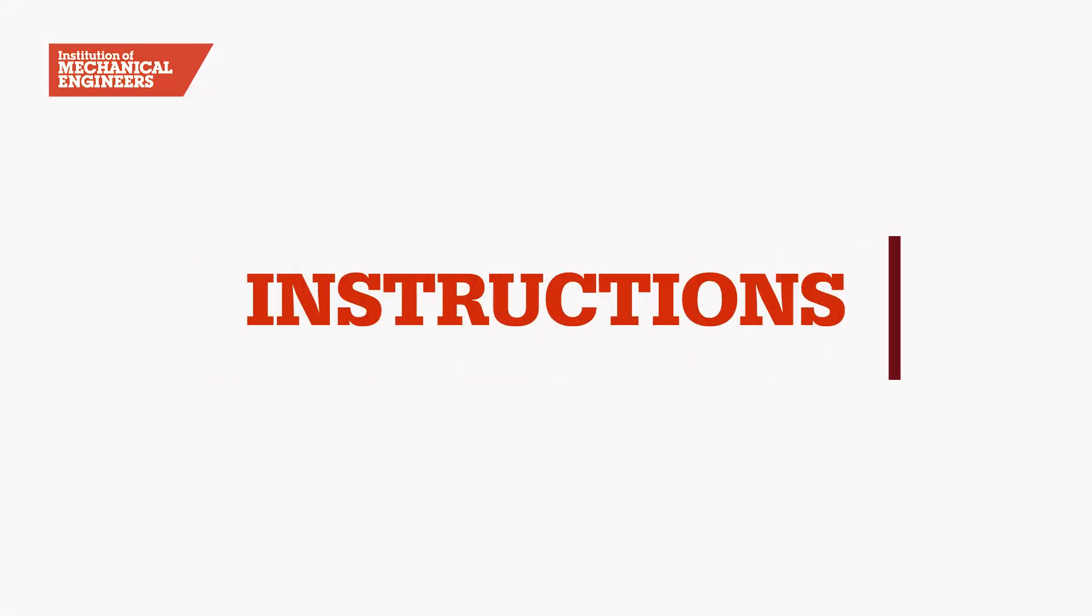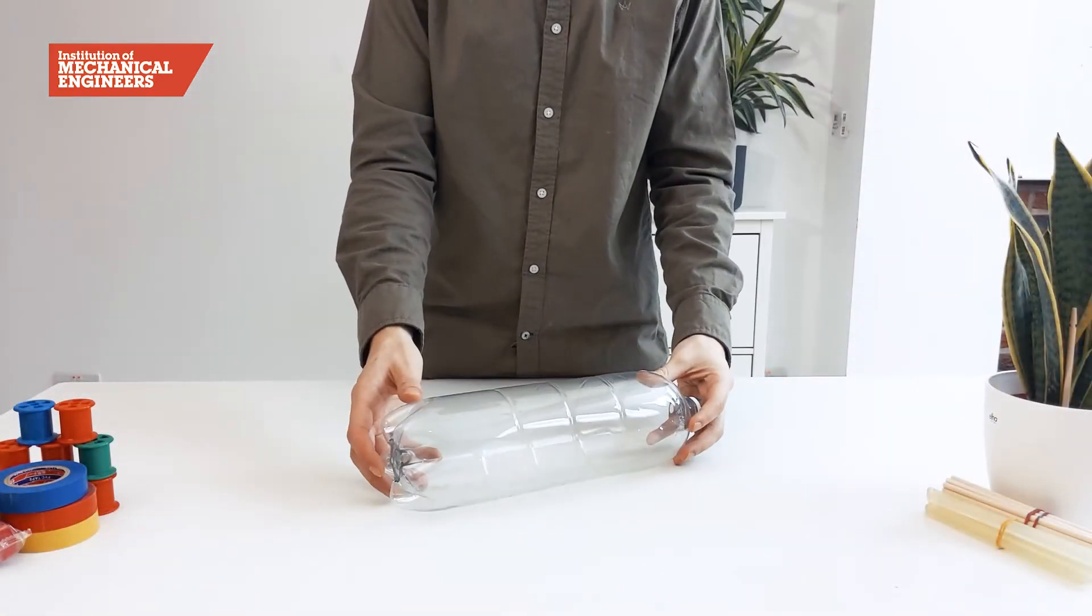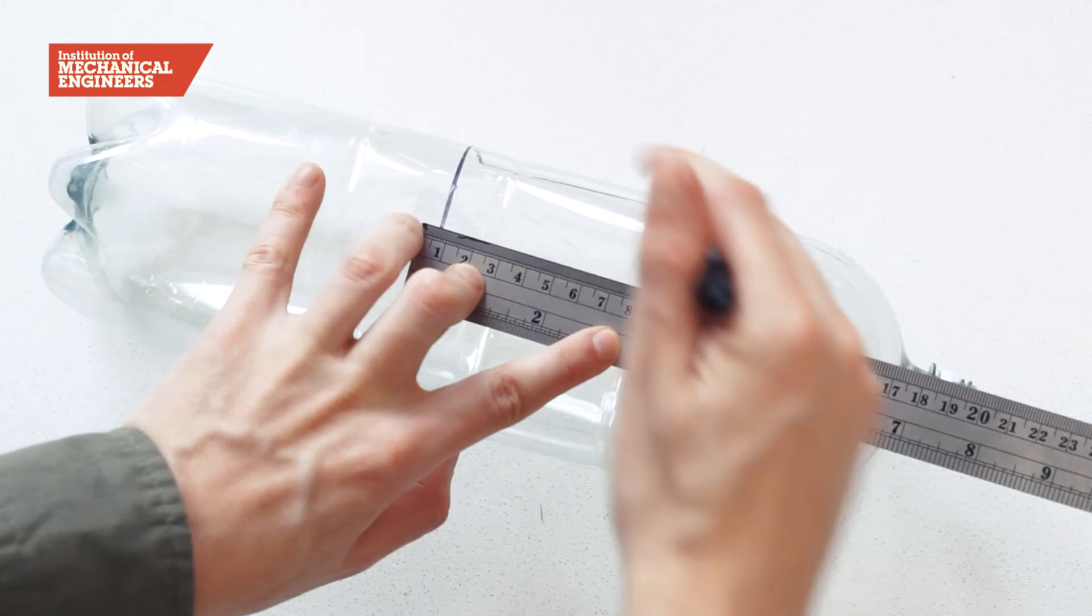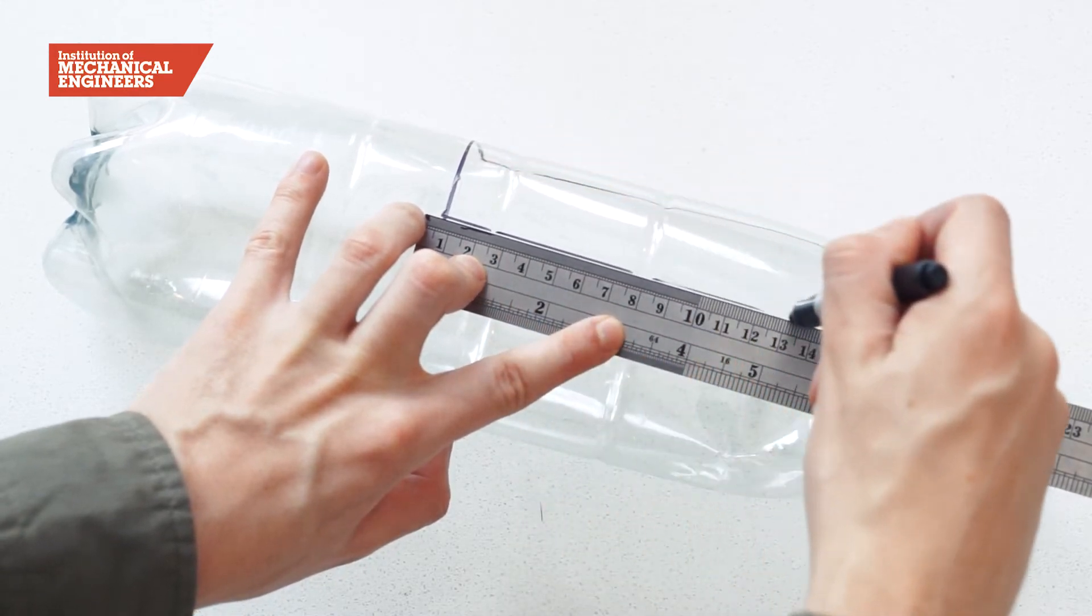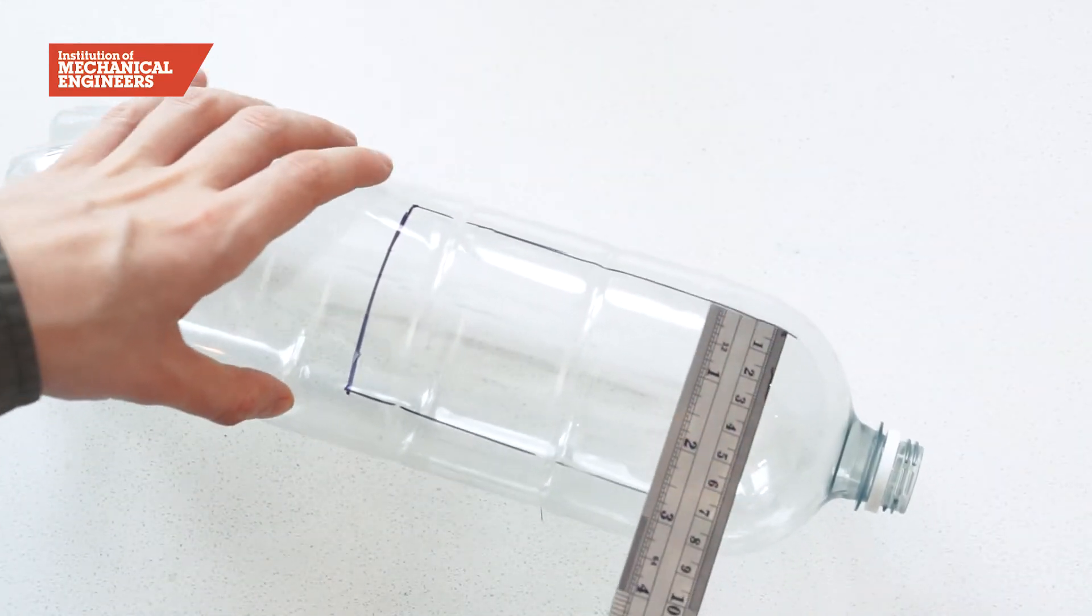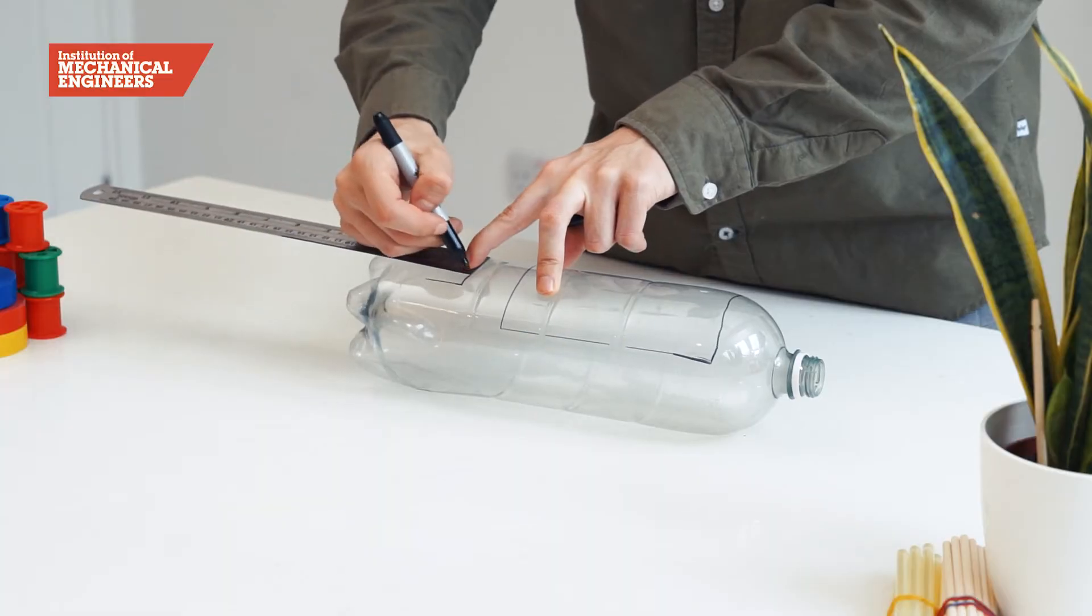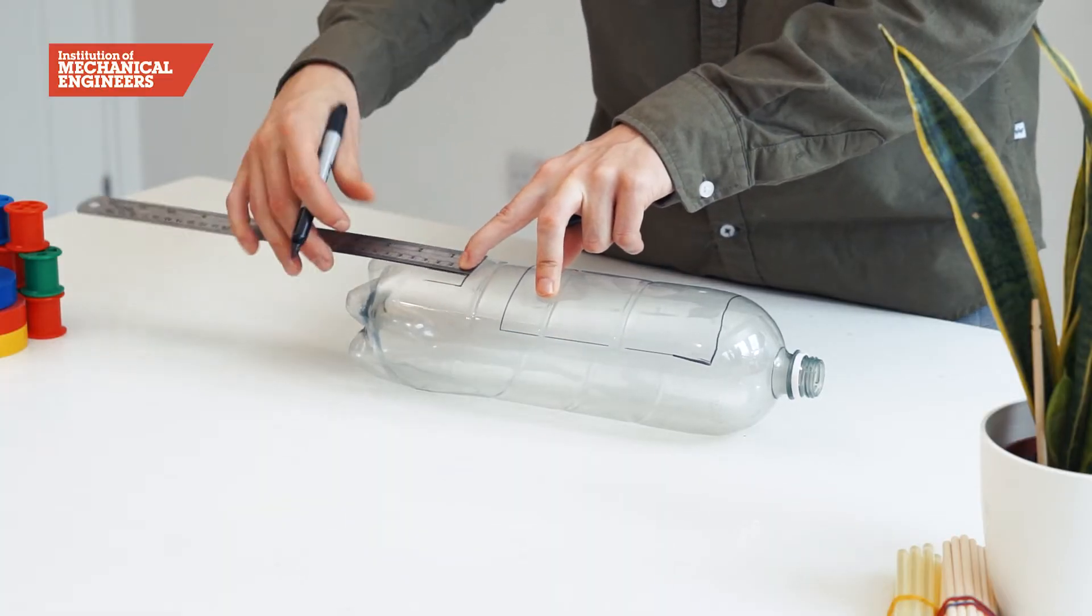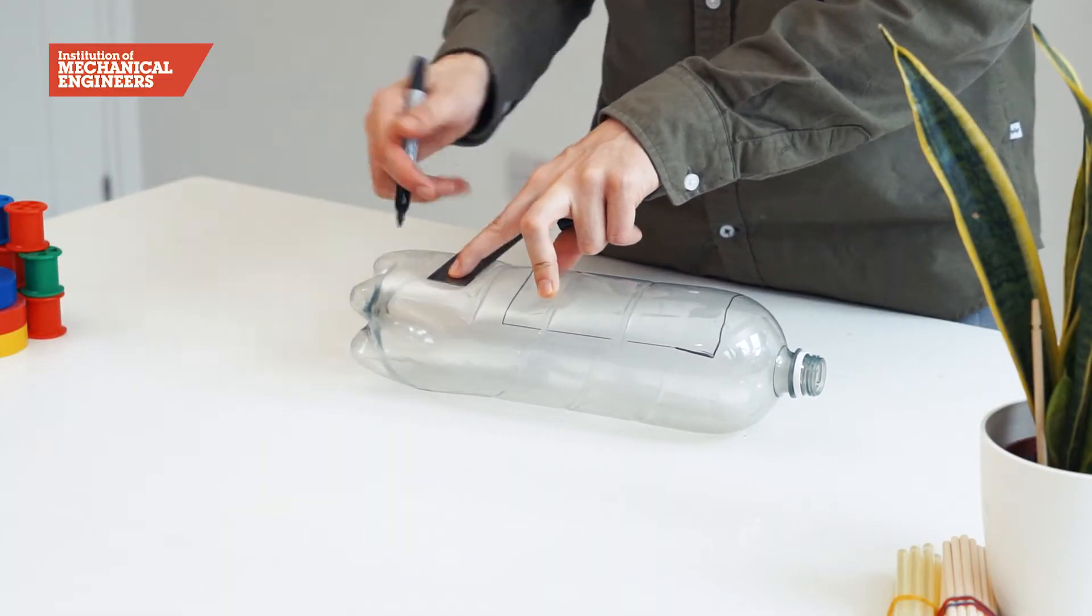Let's get started. First we're going to take a 2 liter bottle of water and measure a tall 15cm by 8cm rectangular hole which will allow us to position the turbine inside. Just below this mark a smaller hole which will allow the water to escape as it flows through the model.